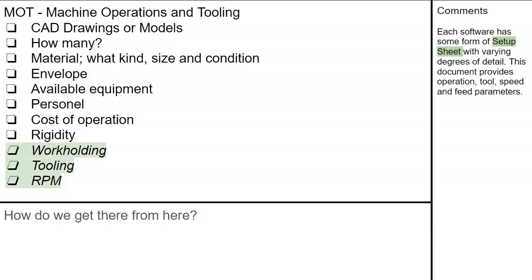Machine operations and tooling: start with CAD drawings or models. How many are we making? What is the quantity? Material — what kind, size, and condition? The envelope of the machines and available equipment to run it. Personnel and their experience, cost of operation, and rigidity. Then we come back to the three just discussed: workholding, tooling, and RPM.